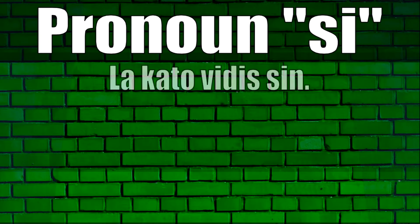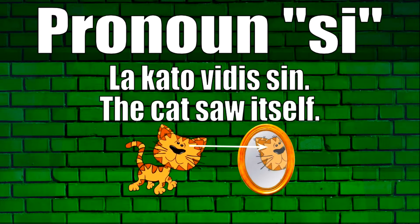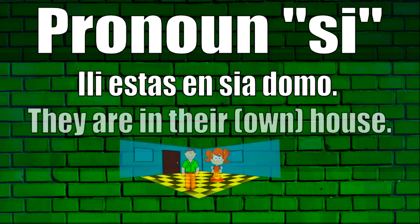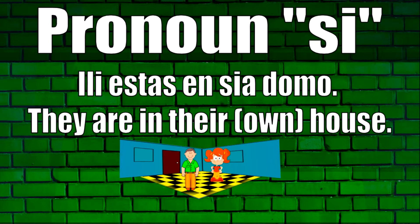Another example is: la kato vidis sin — the cat saw itself. And another example: ili estas en sia domo — they are in their own house. If we said ili estas en ilia domo, that would mean they are in their house, but they would be in the house of other people, not their own house.